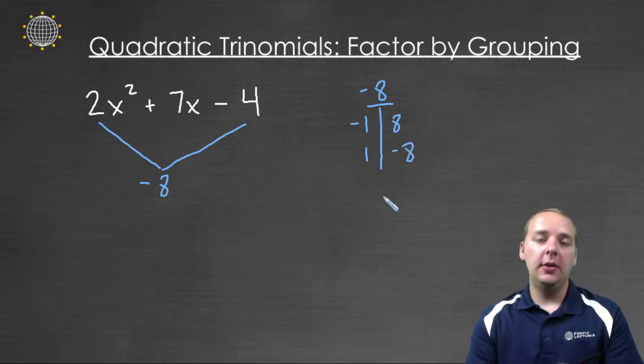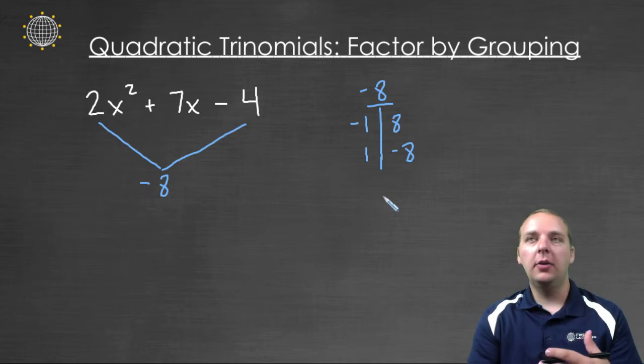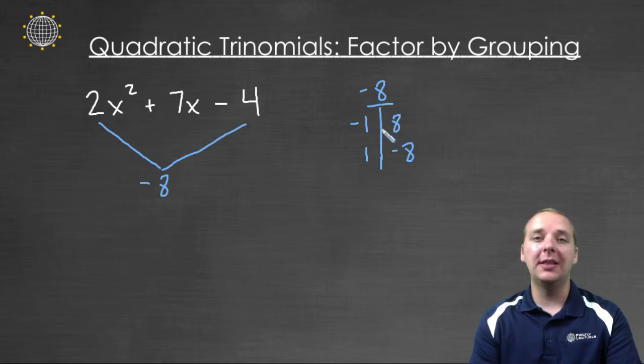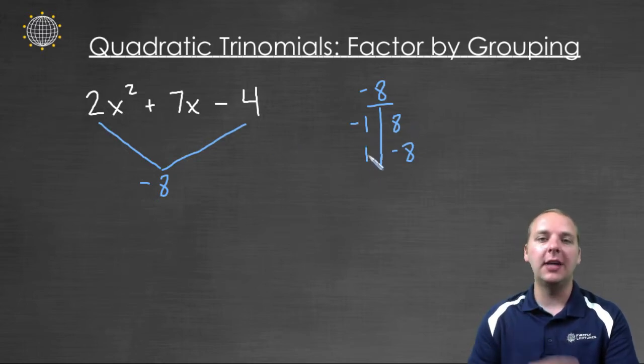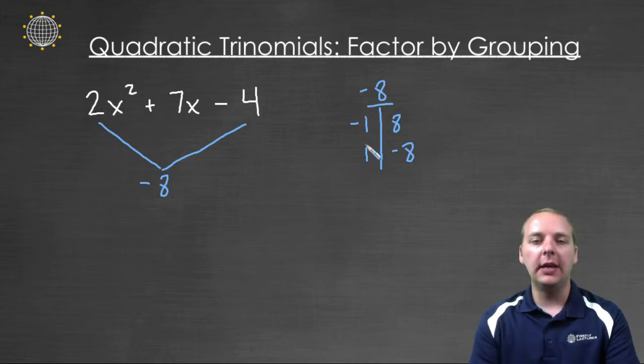And in the earlier videos when we talked about the trial and error method, I emphasized the fact that I usually don't worry too much about the signs when I do that method until the very end. But if you're going to do the grouping method, you actually need to write all the different combinations including the signs that will give you -8. So we actually do need to write all these down.